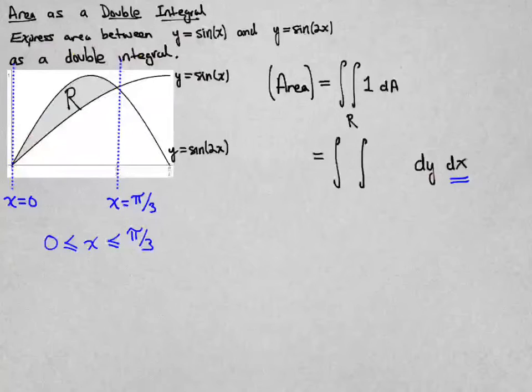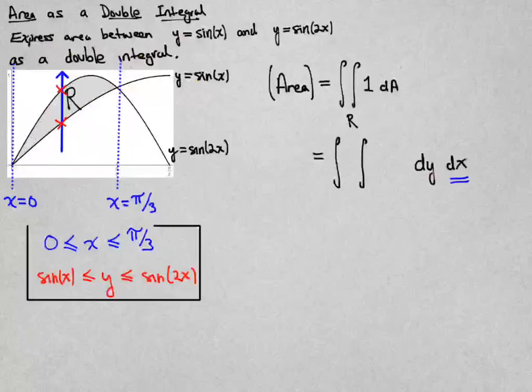I'm then going to think about a generic value of x and represent that by a vertical slice through the region. Where does it enter the region and where does it exit? It enters along y = sin(x) and exits along y = sin(2x), so we should be in between those two curves, and that's represented by this inequality.